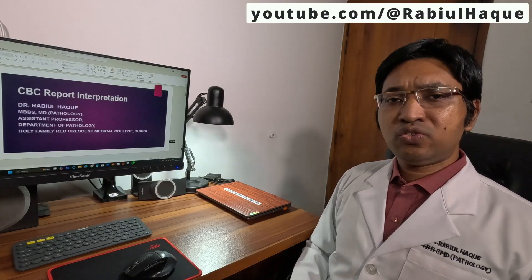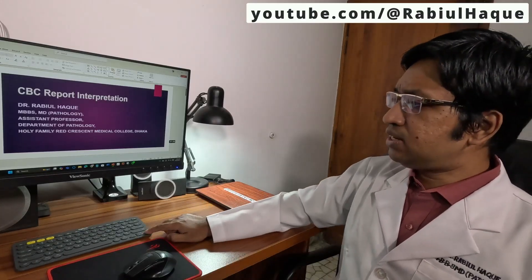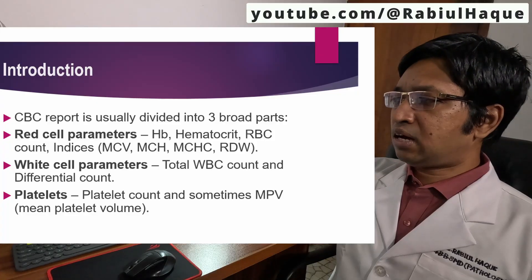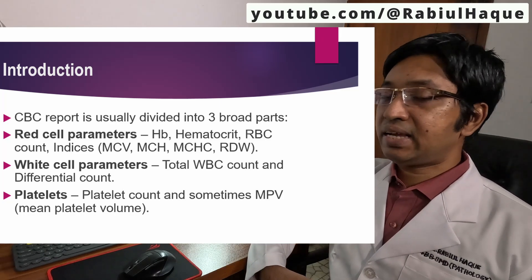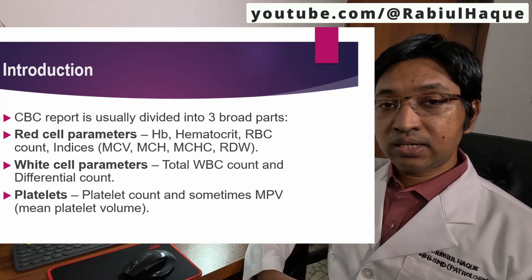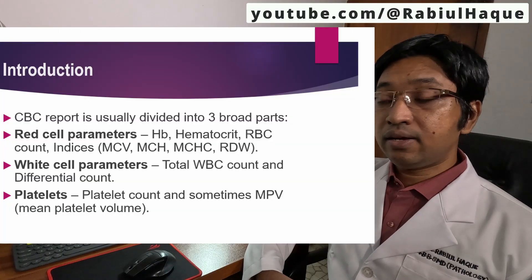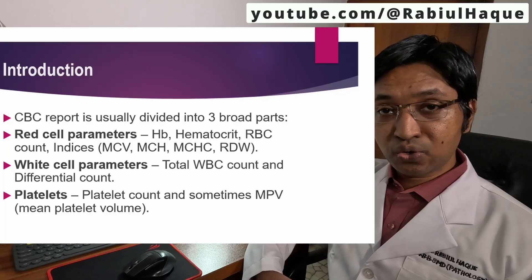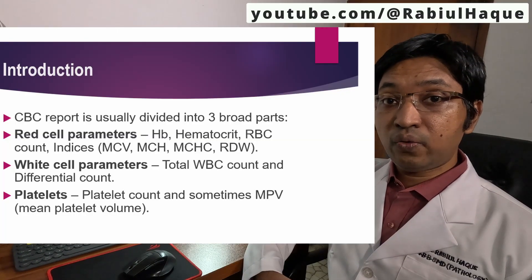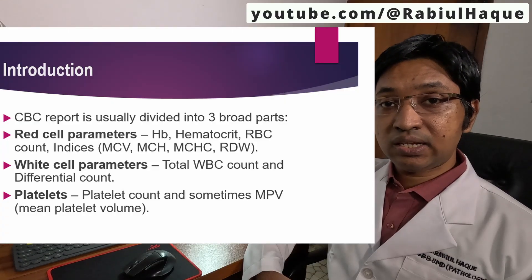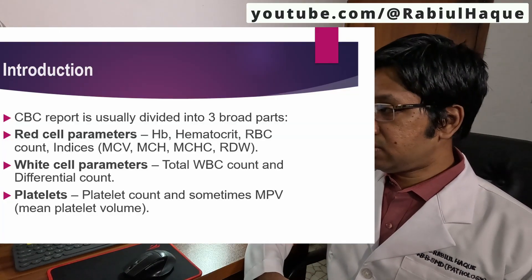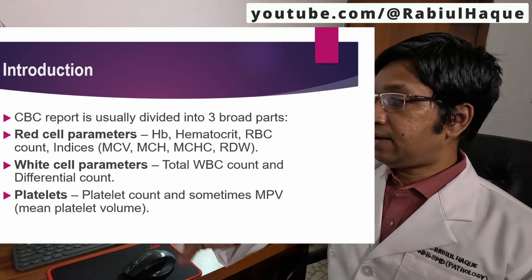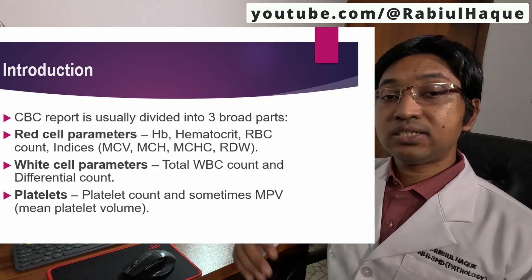Let's begin. Always remember our CBC report has three parameters: red cell parameters, white cell parameters, and platelet parameters. The red cell parameters will include hemoglobin concentration, hematocrit — also known as packed cell volume — red blood cell count, and the red cell indices. The red cell indices include mean corpuscular volume or MCV, mean corpuscular hemoglobin, mean corpuscular hemoglobin concentration, and red cell distribution width. We will talk about all these parameters.